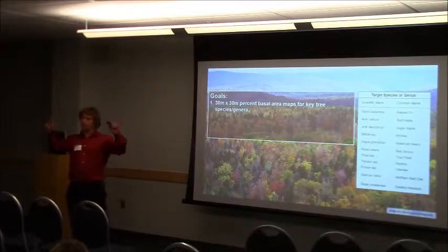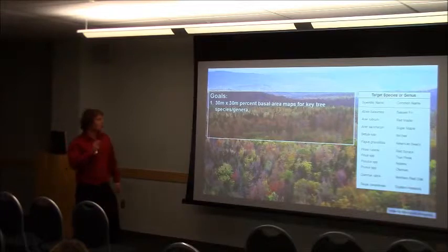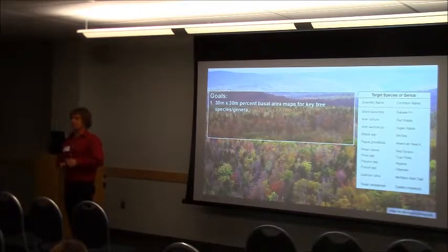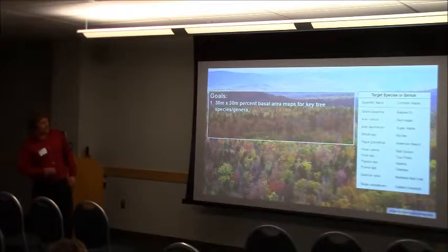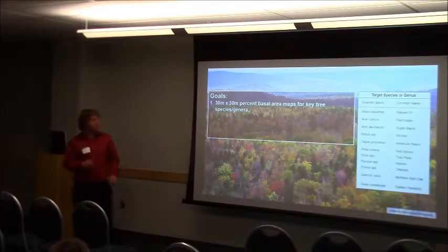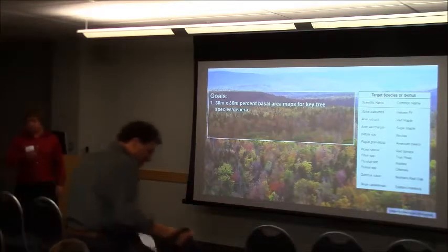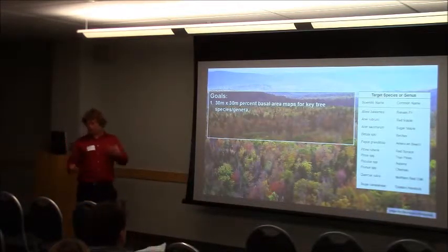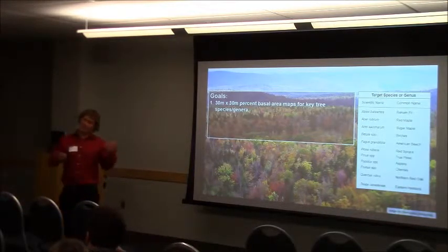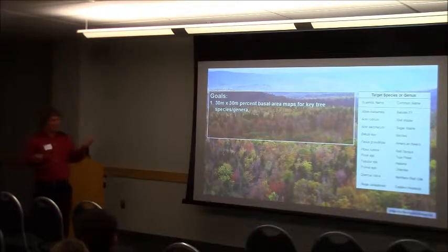So what do I mean by improve large-scale forest mapping? Well, we're really trying to produce 30-meter by 30-meter pixel percent basal area maps for key tree species or genera across the region, which are listed here to your right. This is new, exciting stuff. This hasn't really been done — large-scale forest mapping of structure, especially not down to the species or genus specificity. That's sort of the holy grail of large-scale remote sensing, getting to that species or genus level. It's really exciting, but as somebody whose dissertation work depends on it and it hasn't really been done, that's also a little bit terrifying, because we don't know how well it's going to perform.